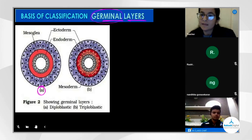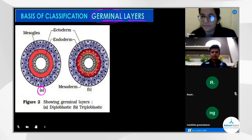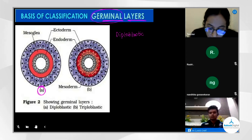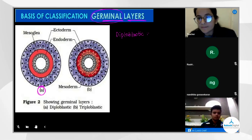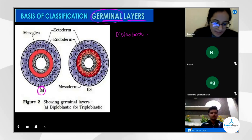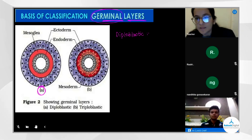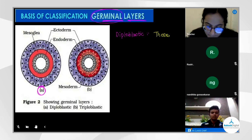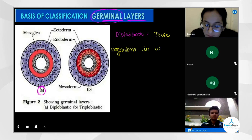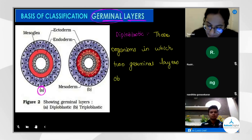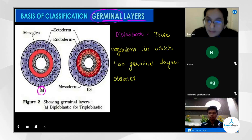The diagram shown is diploblastic. What is the meaning of diploblastic? 'Di' means two, 'blast' refers to the blastula. After the gastrula stage, two germinal layers are observed. Organisms in which two germinal layers are observed are called diploblastic.